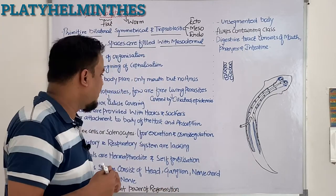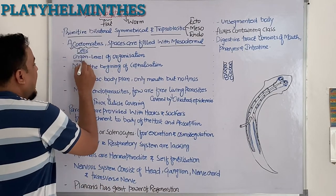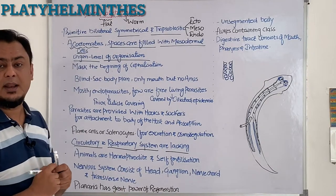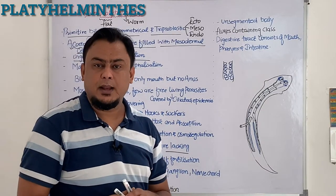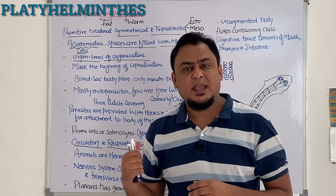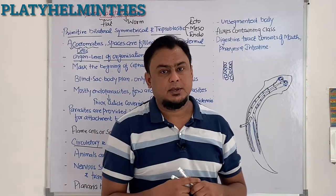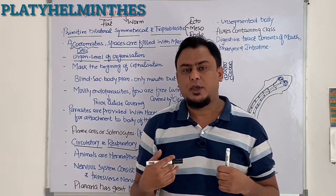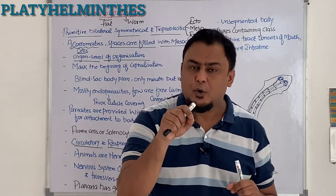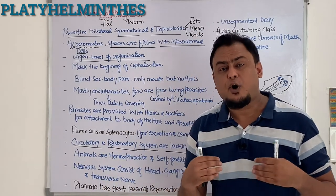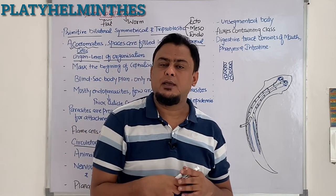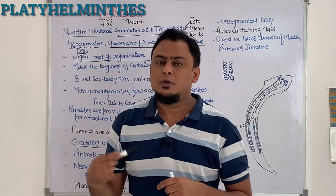Circulatory system and respiratory system are totally absent in this phylum. This animal shows a blind sac body plan — same as in Hydra — which means only one opening exists, the mouth, which serves for both ingestion and ejection. Entry of food and removal of waste happens through the same passage, which is why the term 'blind sac' is given to this phylum.